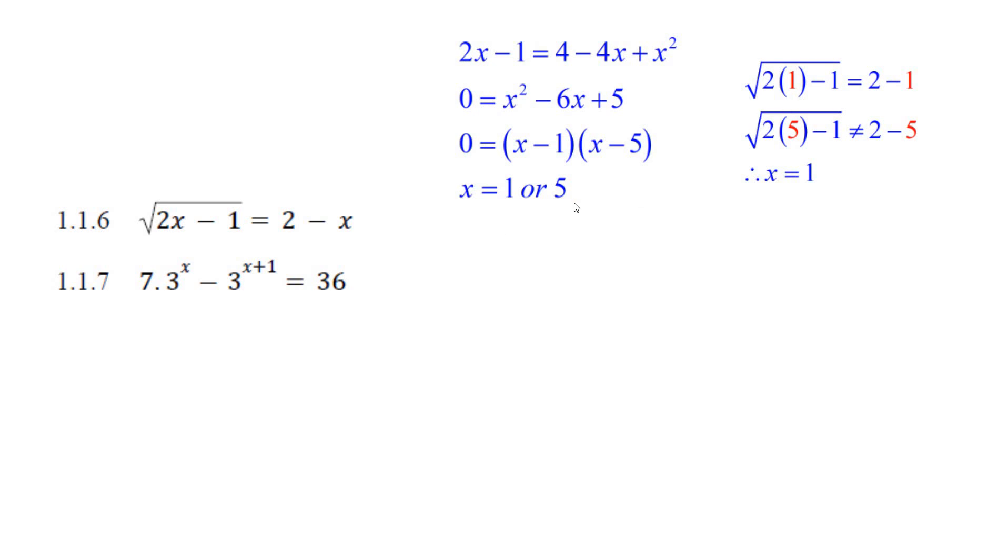You've got to try both numbers, 1 and 5. If you put 1 in to the original thing, it works. The square root of 2 times 1 minus 1 equals 2 minus 1. But if you put 5 in, the square root of 2 times 5 minus 1 doesn't equal 2 minus 5. So the only answer is x equals 1. Don't forget to check. I forgot to check there.